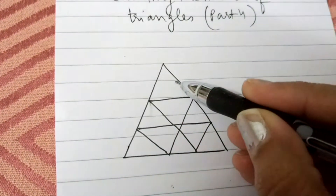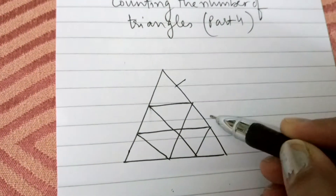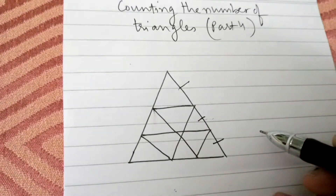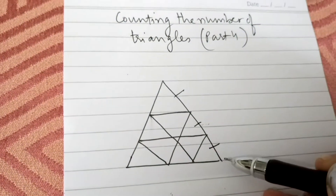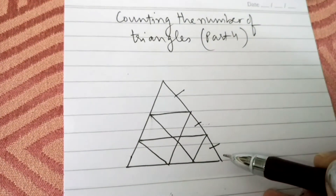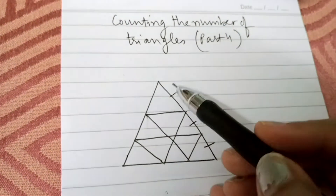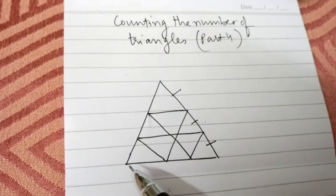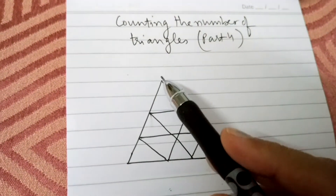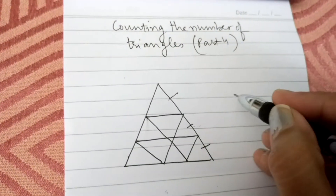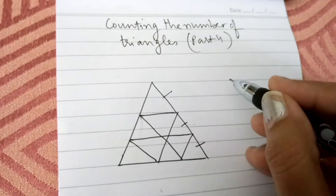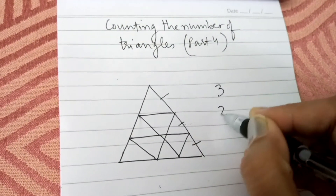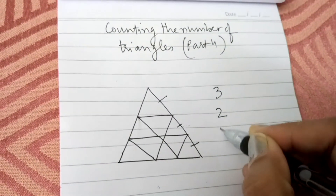Step 1 is to observe how many parts one side is divided into. One side is divided into three parts. If you see from all three sides, each side is divided into three parts, so I will be writing 3, 2, 1.